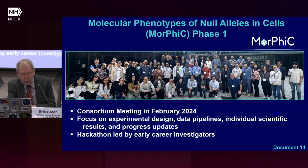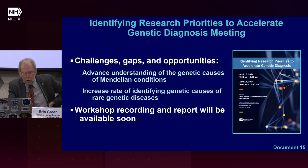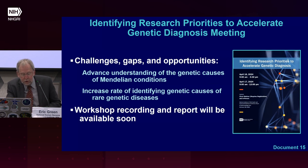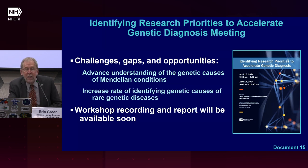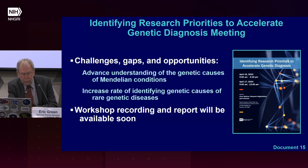External scientific consultants attended the meeting and provided NHGRI valuable feedback. In April, NHGRI hosted a strategic planning meeting on identifying research priorities to accelerate genetic diagnoses. Presentations and discussions focused on major challenges, gaps, and opportunities to advance understanding of the genetic causes of Mendelian conditions and to increase the rate of identifying genetic causes of rare genetic diseases. Topic areas included emerging technologies, data sharing, linking genomic variants to function, and computational tools. The workshop hosted about 25 in-person participants in addition to remote viewers.